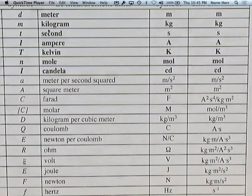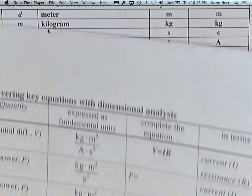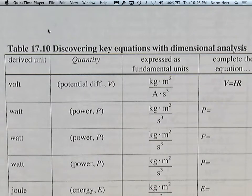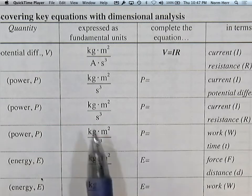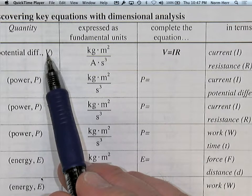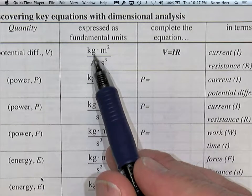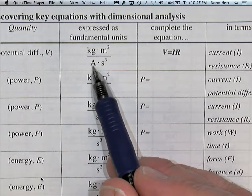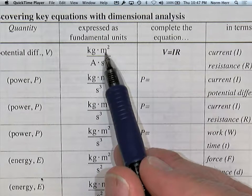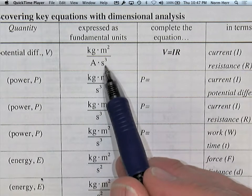Now we'd like to do some dimensional analysis with the basic concepts and units in science, which will appear in Table 17.10. These are key equations that we can understand with dimensional analysis. For example, looking at potential difference measured in volts: a volt is expressed in SI units as a kilogram meter squared per amp second cubed, or in terms of quantities, mass times length squared divided by electrical current times time cubed.